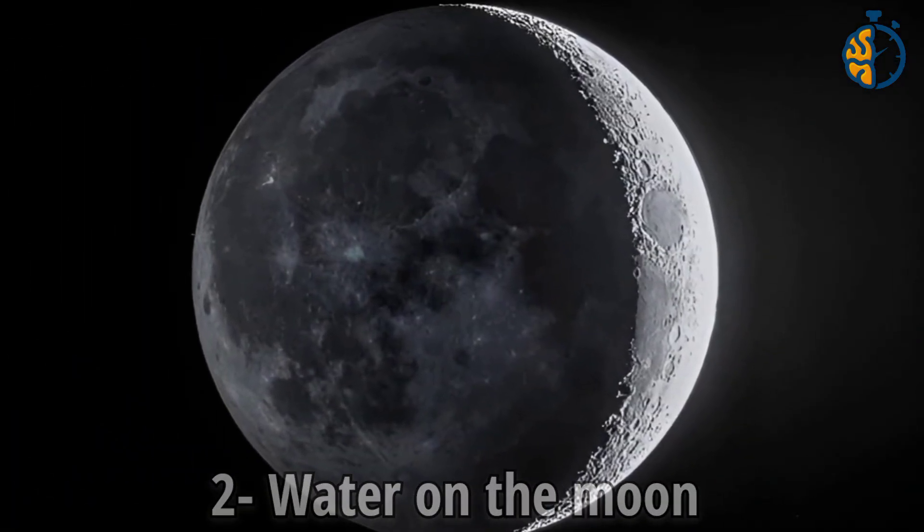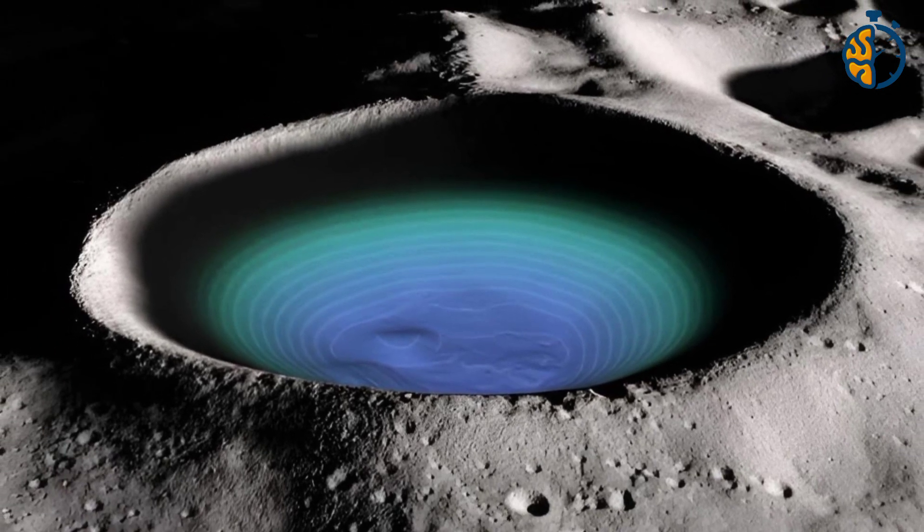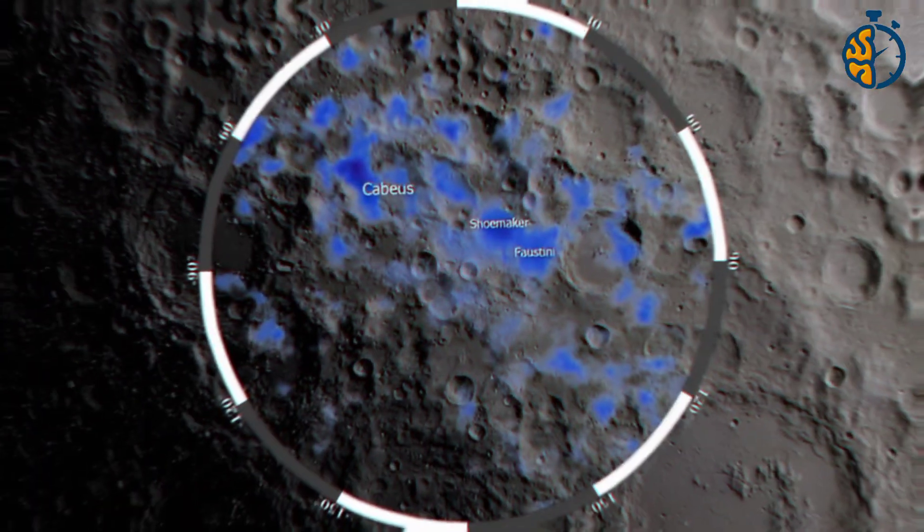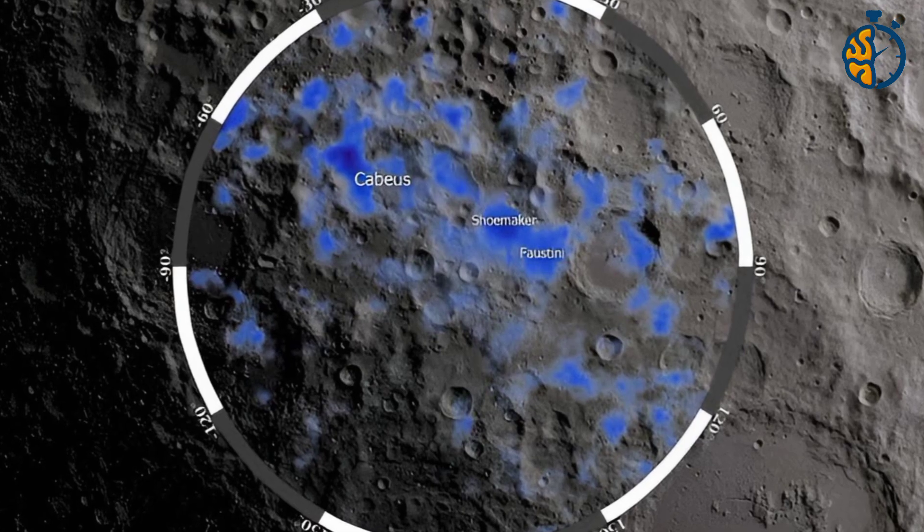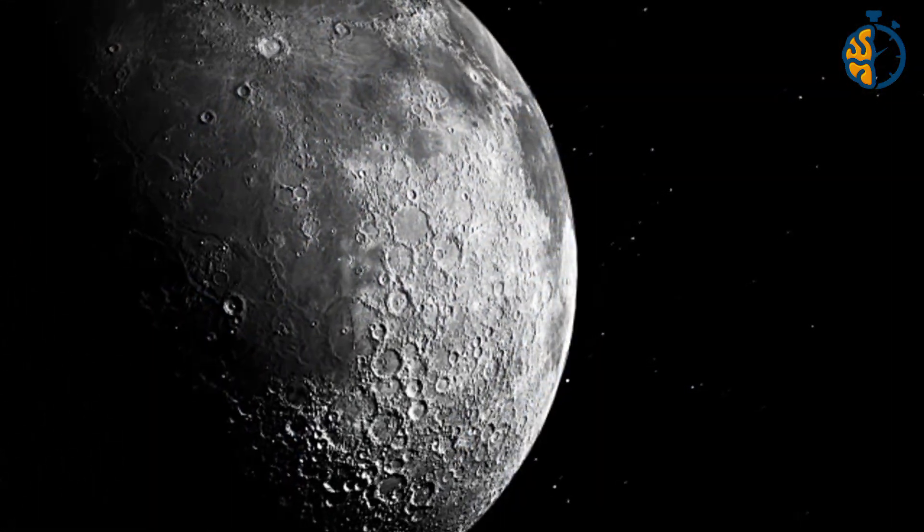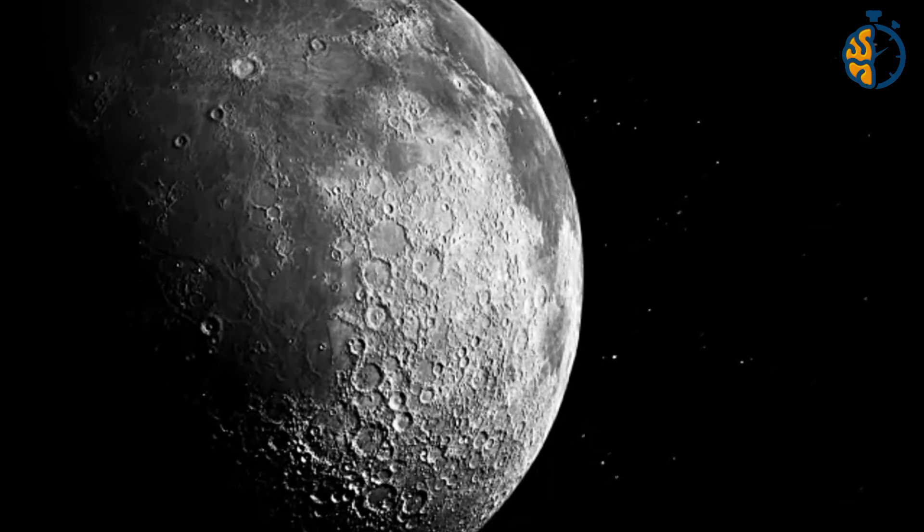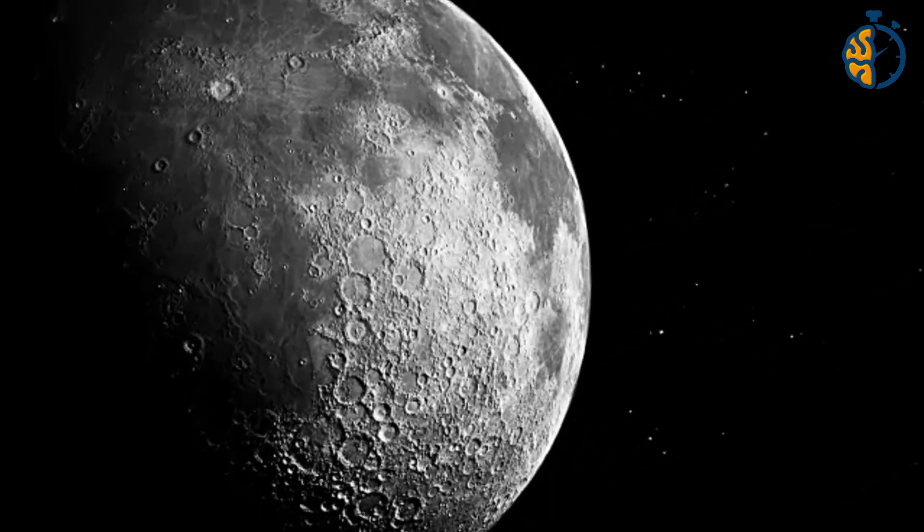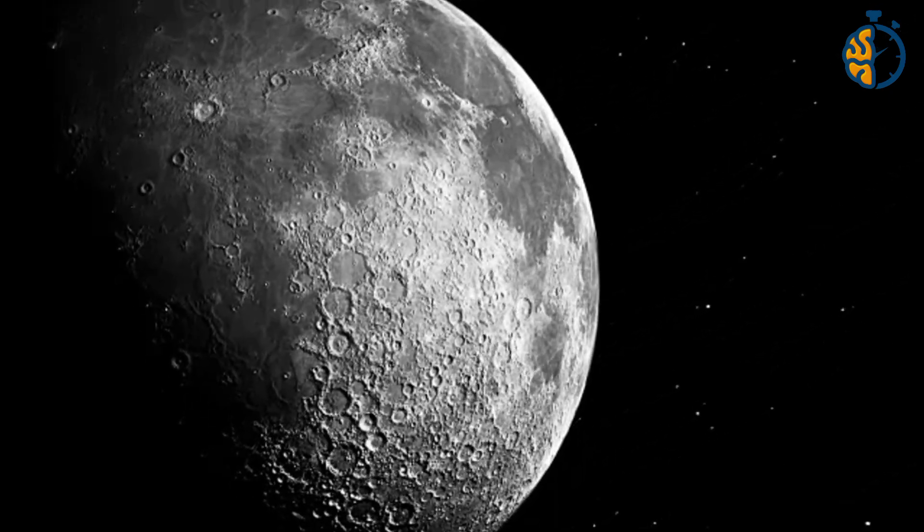Number 2. Water on the moon. Water cannot exist in a liquid state on the surface of the moon, but since the year 1960, scientists believe that water exists in the form of ice within meteor impact craters. Recently, scientific missions have confirmed that there are abundant amounts of water ice and water vapor on the surface of the moon.